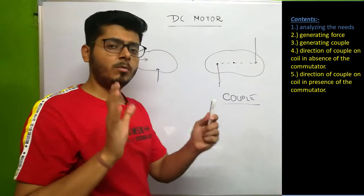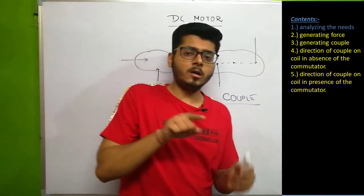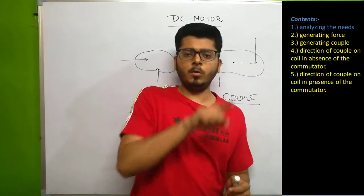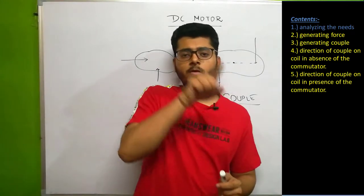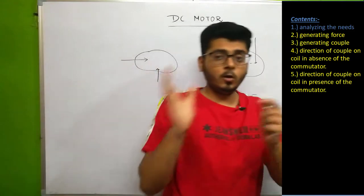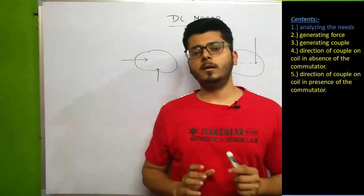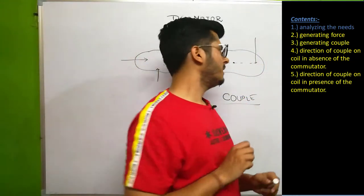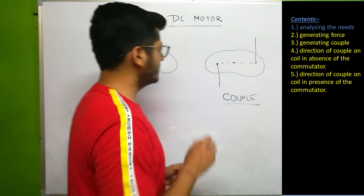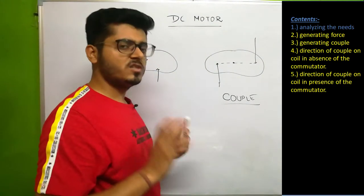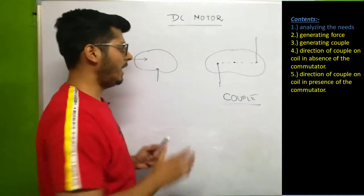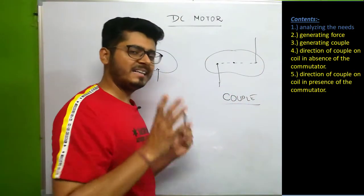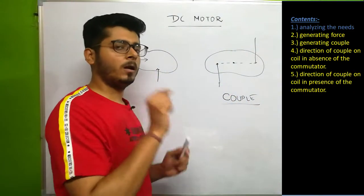If you have a body on which a couple is constantly acting in one direction, the body will keep on moving in that one direction only and will not do any other kind of motion. So this is our first objective — to understand how we can generate a couple that acts on a body.